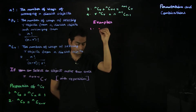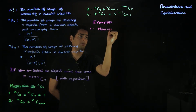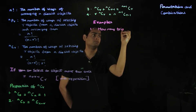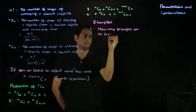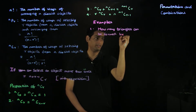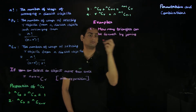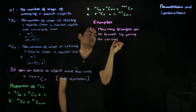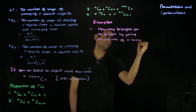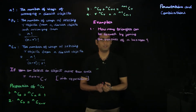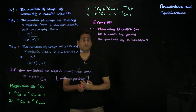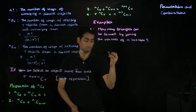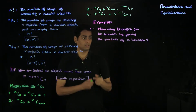The first example asks us to determine the number of triangles that can be formed by joining the vertices of a hexagon. We've chosen a hexagon so that the viewer can work it out by enumeration, but in general the question can be generalized to how many triangles can be formed by joining the vertices of an n-gon, where n can be arbitrarily large.